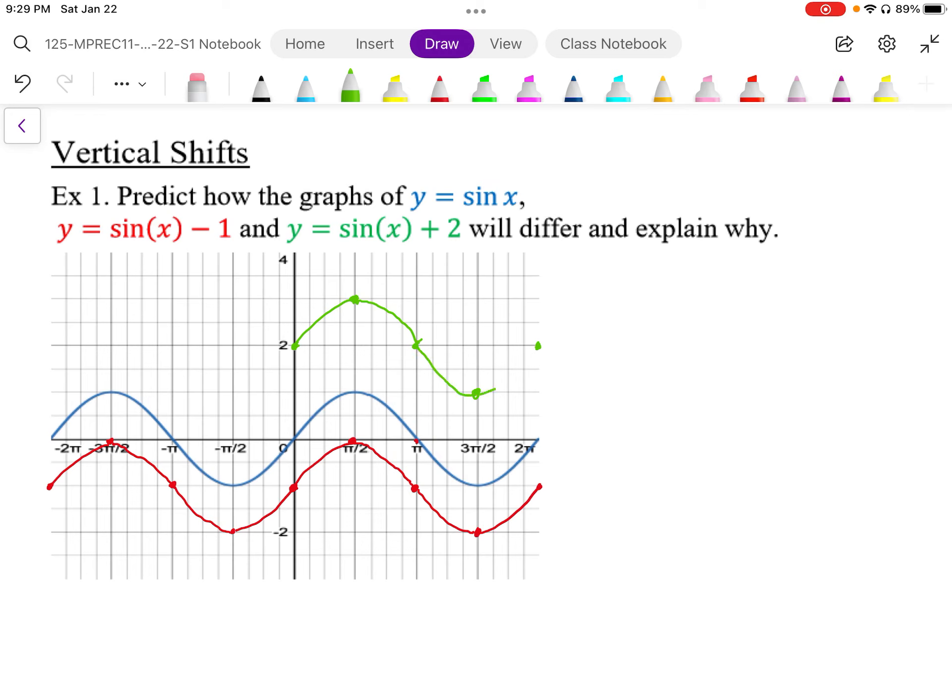And that graph relative to the blue graph has been shifted plus 2. Let's sketch the rest of this graph here. And so the graph, the green graph relative to the blue is a plus 2 vertical shift transformation.